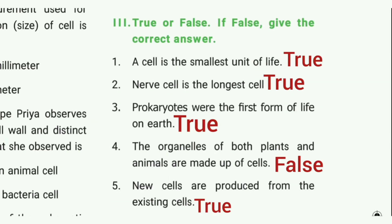Then true or false. First one: a cell is the smallest unit of life. The answer is true. Second one: nerve cell is the longest cell. The answer is true. Third one: prokaryotes were the first form of life on earth. The answer is true.